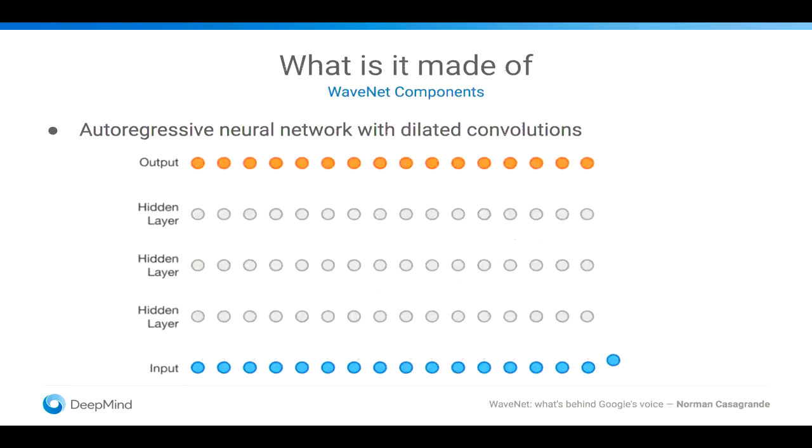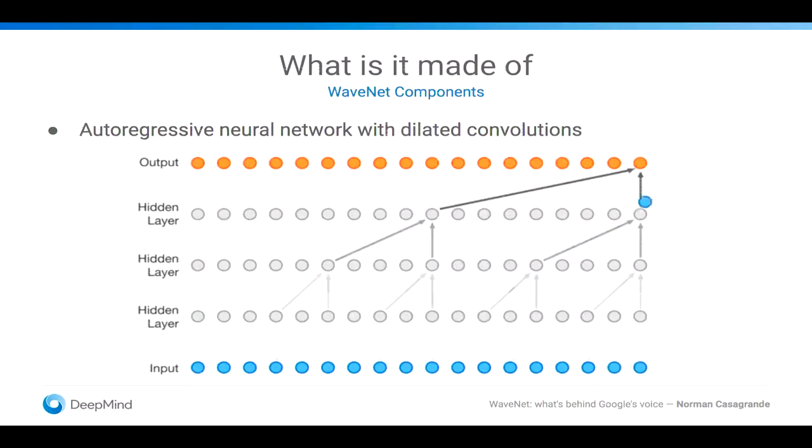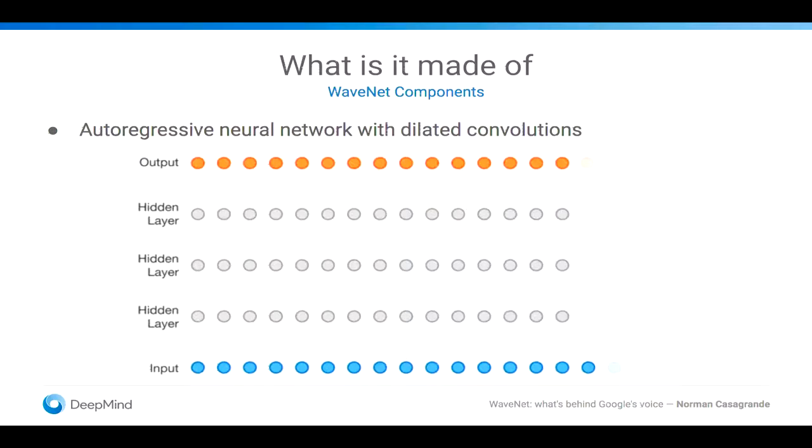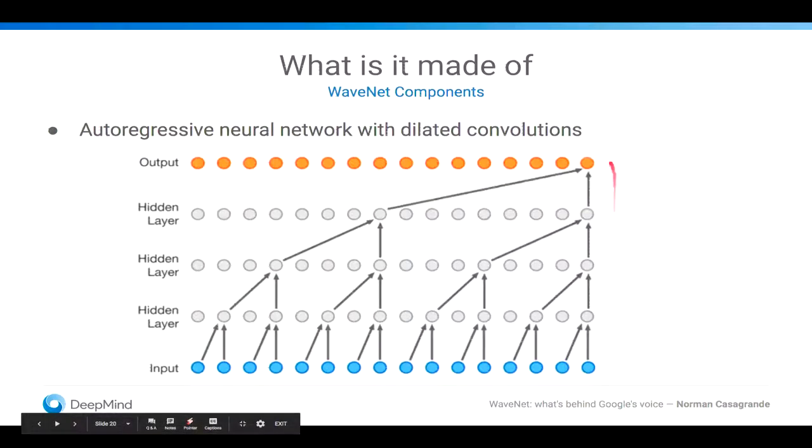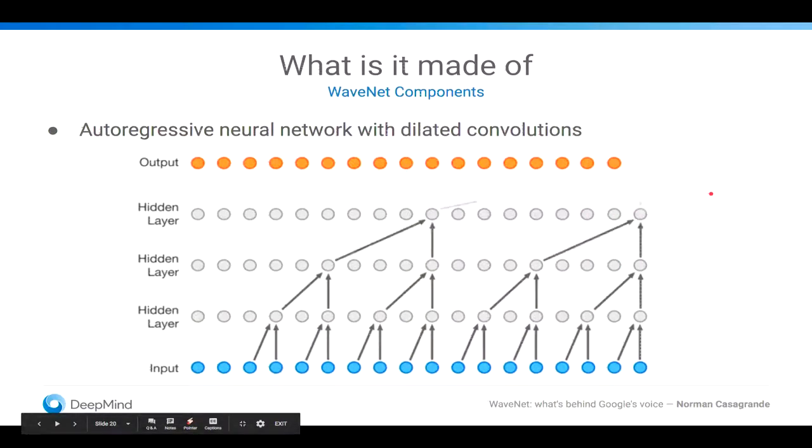And in summary, you got this fancy animation, which was created when the blog post about WaveNet came out, and shows the whole process. You see here, you start with the input, it goes up, it generates the output, you use it again, and then so forth, and so forth, and so forth.